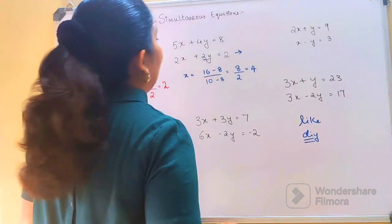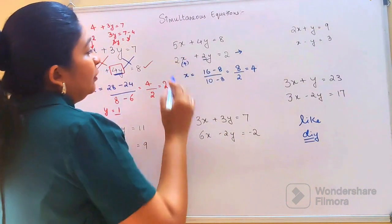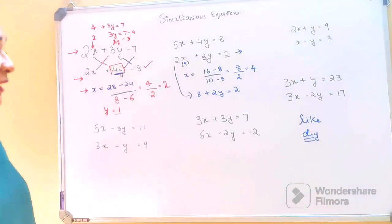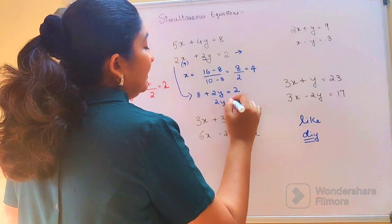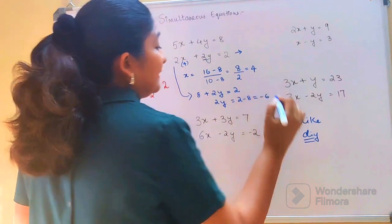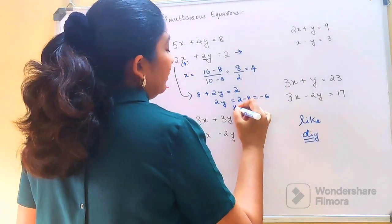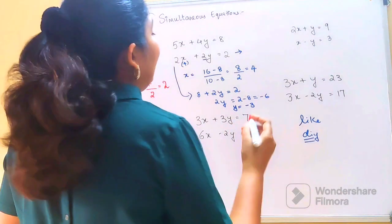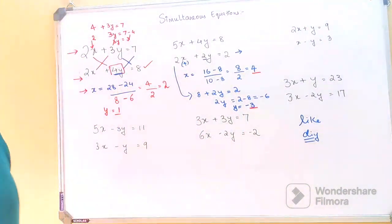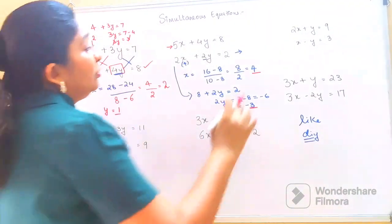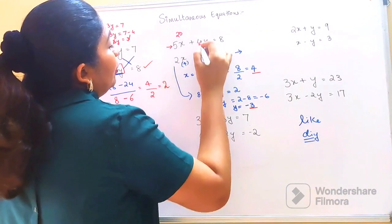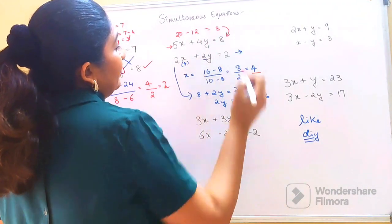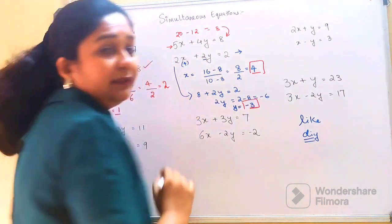We'll substitute into one of the equations: putting x as 4, so 2 into 4 gives 8, plus 2y equals 2. Shifting the 8 across: 2y equals 2 minus 8, which is minus 6. Dividing both sides by 2, y equals minus 3. So x equals 4 and y equals minus 3. Substituting into the second equation: 5 into 4 is 20, 4 into minus 3 is minus 12, and 20 minus 12 equals 8 — correct!